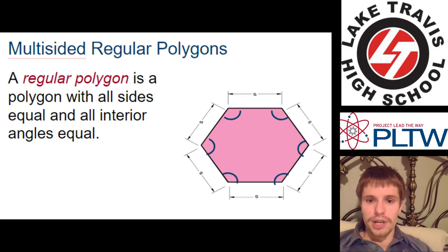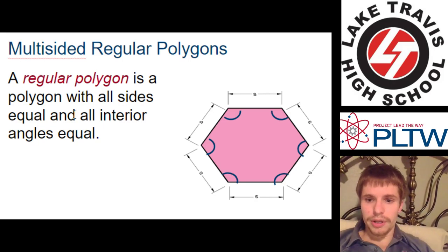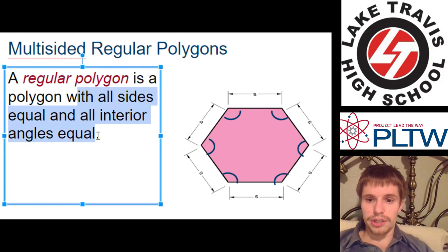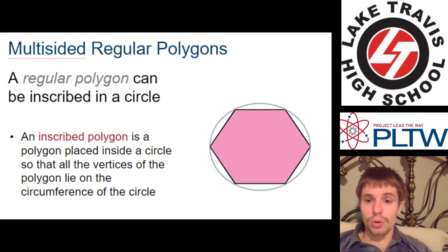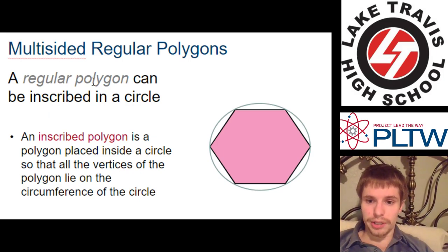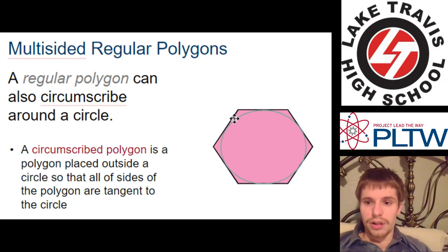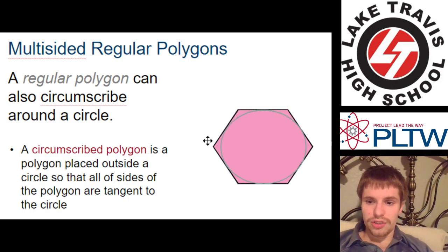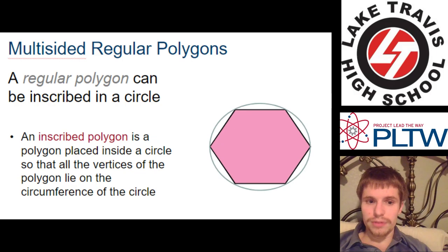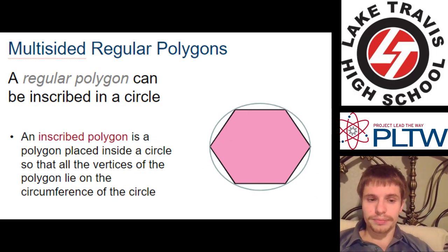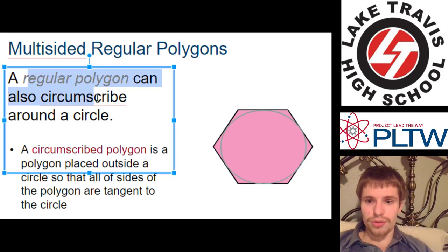Now we're talking about multi-sided regular polygons. A regular polygon is a polygon with all sides equal and all interior angles equal no matter how many sides it has or angles it has. A cool thing about multi-sided regular polygons is that it can be inscribed in a circle. In other words, all of its corners will touch a circle if the circle goes all the way around it. Also, all of the sides will touch a circle if it's circumscribing or if it's a circumscribed polygon. All of the sides will touch a circle and all of the corners will touch a circle. Different circles, obviously. But that's how you know that it's a regular polygon.